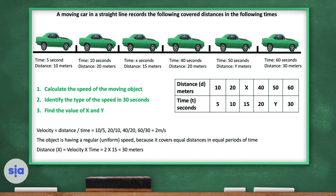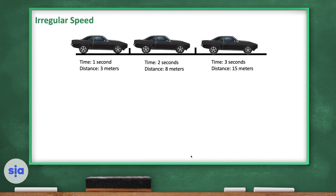To find the unknown distance x, multiply the speed by time: 2 × 15 = 30 meters. To find the unknown time y, divide the distance by speed: 50 ÷ 2 = 25 seconds.